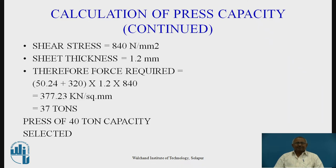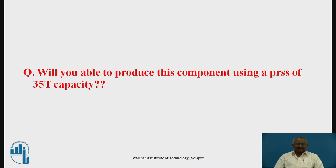For calculation of press capacity, the shear stress of the sheet metal is given as 840 N/mm² and sheet thickness is 1.2 mm. Force required = (perimeter for piercing + perimeter for blanking) × sheet thickness × shear stress = (50.24 + 320) × 1.2 × 840, which comes out to approximately 377.23 kN, or approximately 37 tons. Considering a factor of safety, a press of 40-ton capacity should be selected.